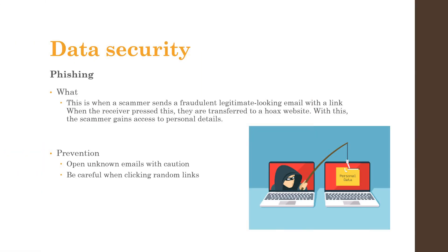Next on this list is phishing. Phishing is when a legitimate-looking email is sent with an attachment or a link. When the receiver presses the link, they are redirected to a bogus website which gives the creator of the scam email access to your bank account and personal data. This can be prevented by being cautious when opening unknown emails and avoiding clicking on random links.